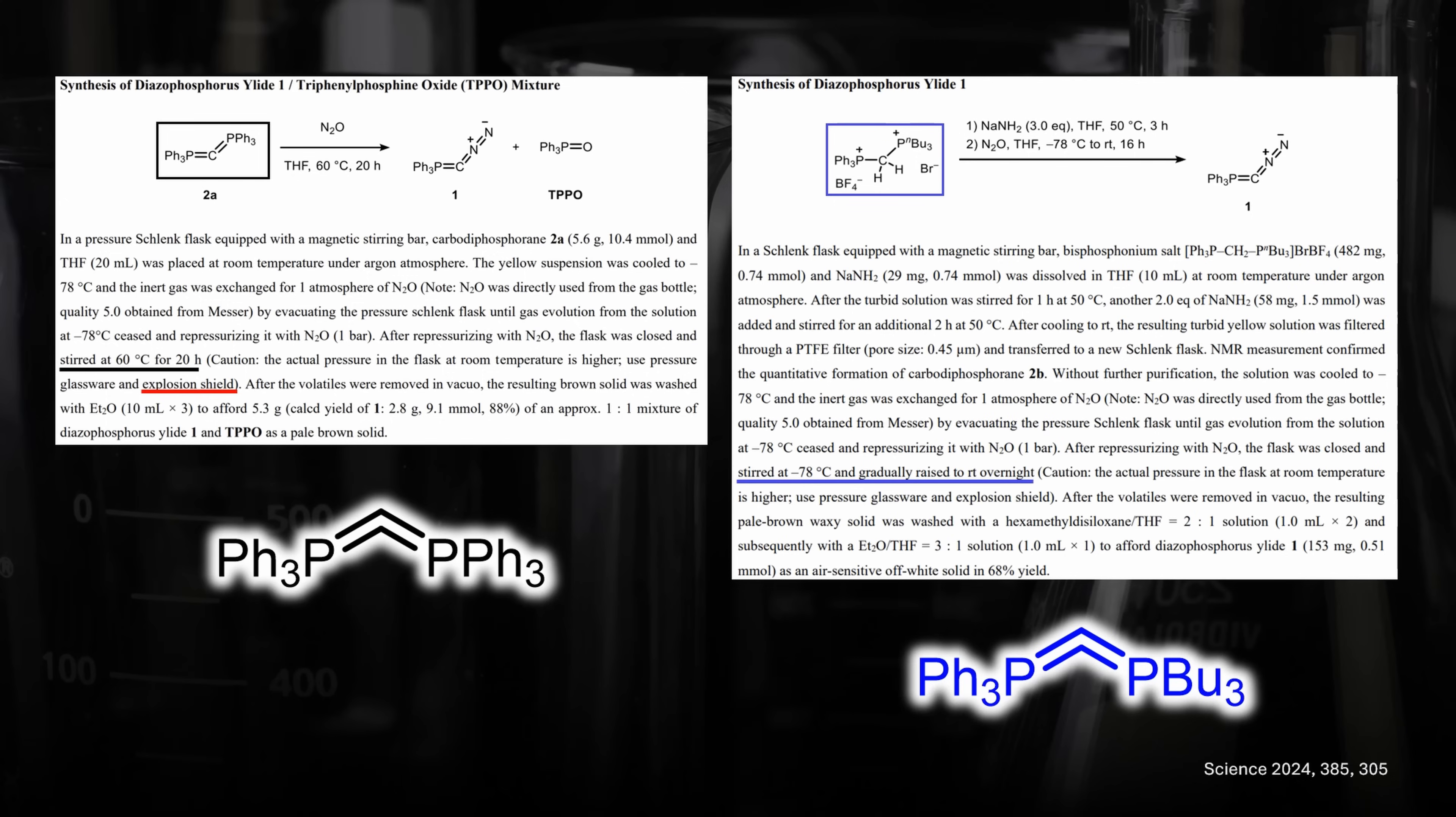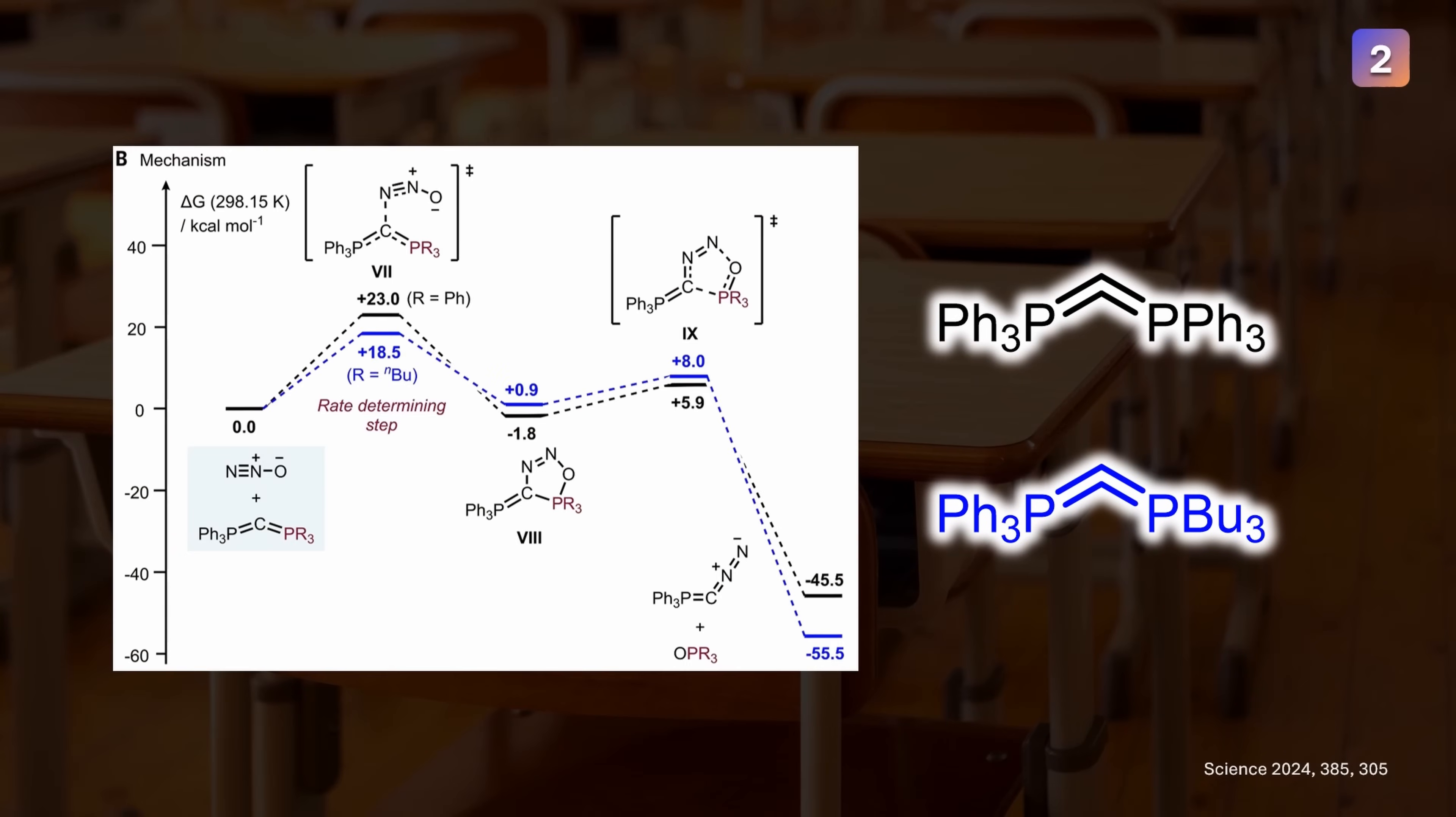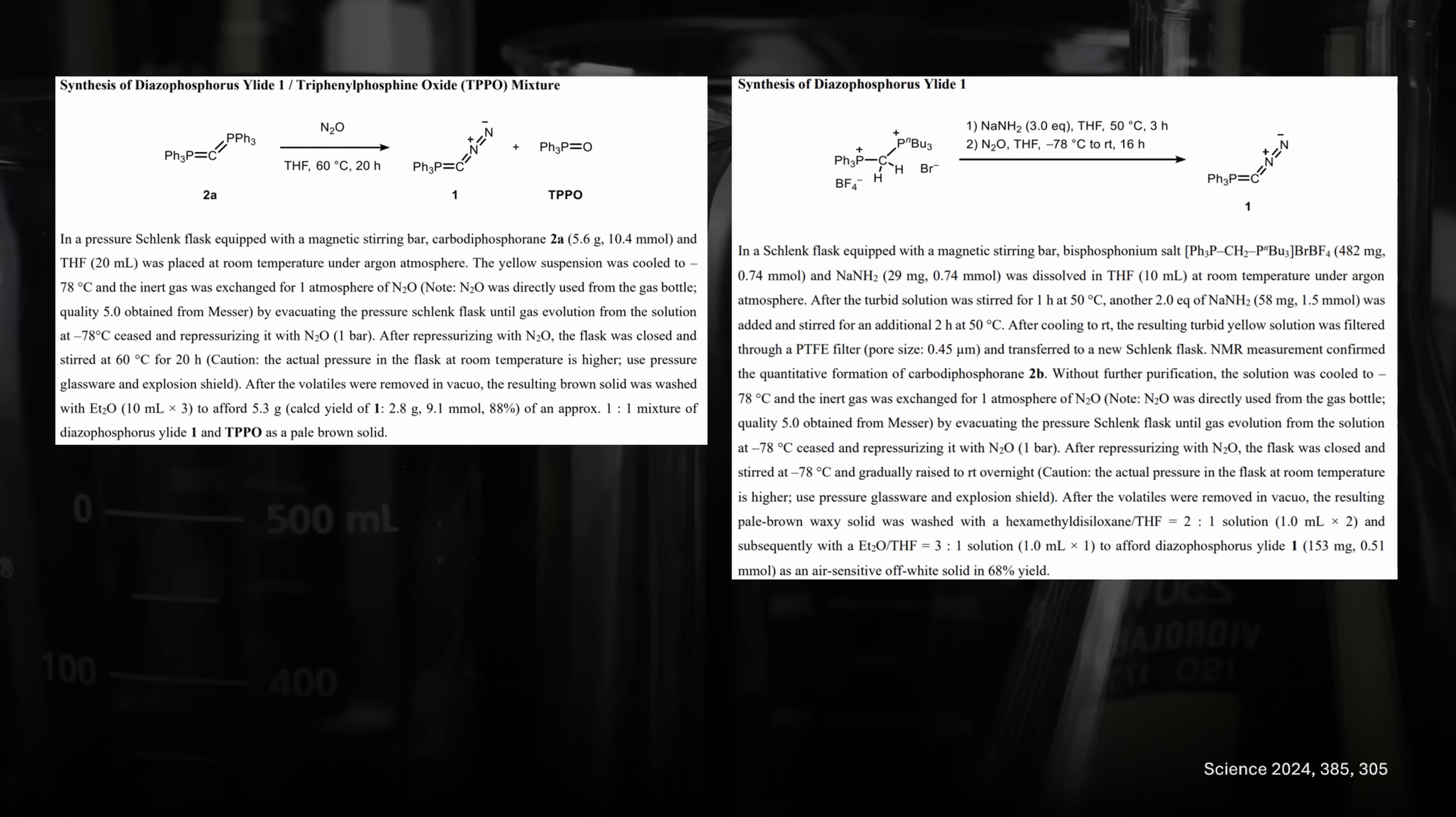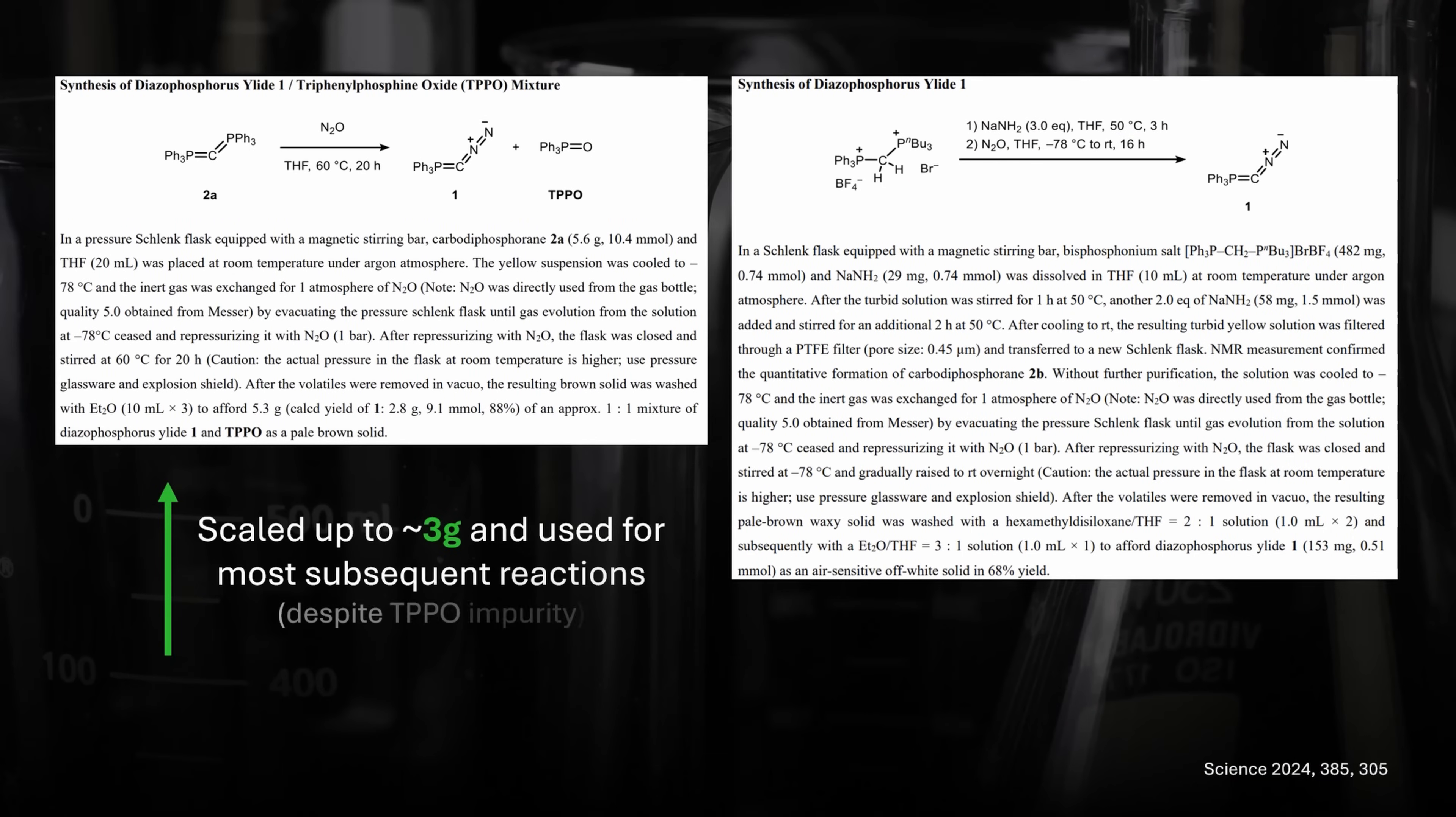Computational studies revealed that the transition state of the rate-determining step, the initial 3-plus-2 addition, is almost 5 kilocalories per mole lower in energy. The authors suggest that because the central carbon has a higher electron density for butyl versus phenyl, it is more reactive for the nucleophilic attack to N2O. This not only explains the milder conditions, but also is a nice example of the superior importance of the rate-determining step. The blue energy levels for other mechanistic steps are actually higher for N-butyl, but because they are much lower than the highest energy barrier, they don't matter. We can also nicely see the large energy dip after release of the phosphine oxide. Even though the second synthesis allowed better purification from the phosphine oxide byproduct, the chemists also used the first approach with the symmetrical educt and even scaled it to multiple grams.